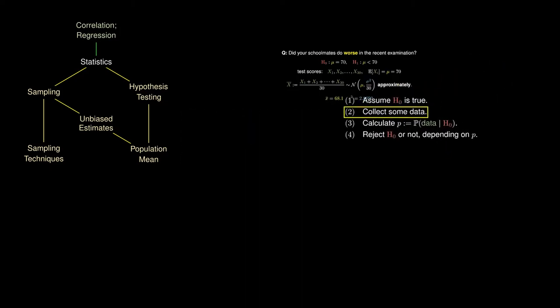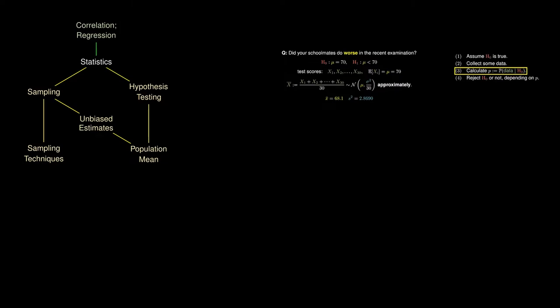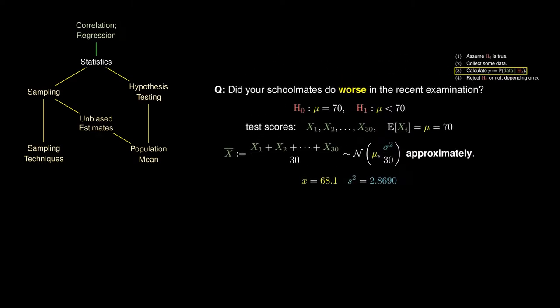With the data at hand, we can now calculate the probability that this data would be obtained if the mean score remained at 70 marks. To do that, we can use s-squared as an approximate of the population variance, since s-squared is an unbiased estimate of the population variance. Under the null hypothesis, the mean of the sampling distribution is 70. This now allows us to calculate the probability that we would have obtained 68.1 or something more drastic.